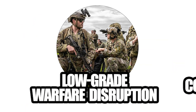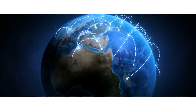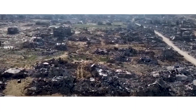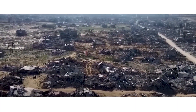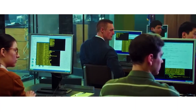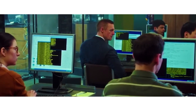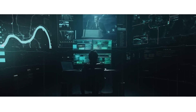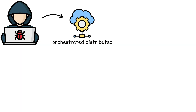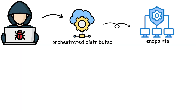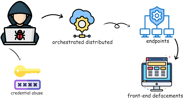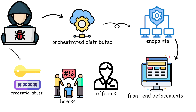Low-grade warfare disruption is the lowest technical tier used by states or proxies during conflict. These operations flood or overwhelm outward-facing services to deny access and create confusion. The methods are simple: orchestrated distributed denial of service across many endpoints, front-end defacements, and bulk credential abuse to lock or harass officials.